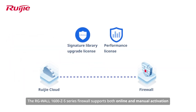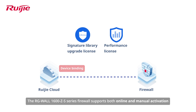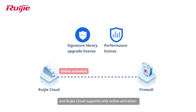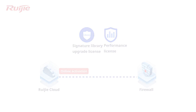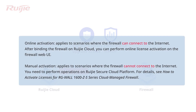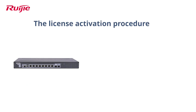The RGWALL 1600Z S-Series Firewall supports both online and manual activation, while RUIGIA Cloud supports only online activation. Online activation applies to scenarios where the firewall can connect to the internet. After binding the firewall on RUIGIA Cloud, you can perform online license activation on the firewall web UI.